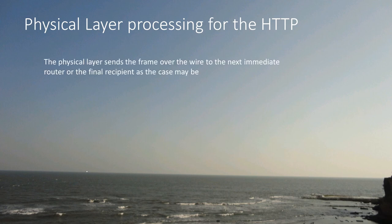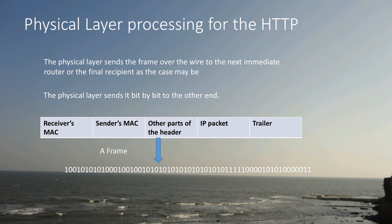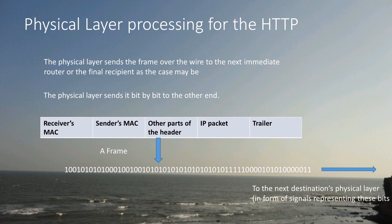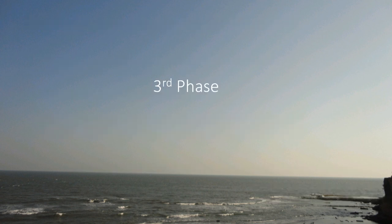The physical layer's job is to send the frame over the wire, bit by bit to the other end. For the physical layer, the frame is only a sequence of bits. It does not really know what is MAC, what is packet, what is trailer. It only understands that these are the bits which need to be sent. It converts these bits into signals and sends them across, without knowing what each bit means. The next destination is the physical address — the job of the physical layer is simply to send.